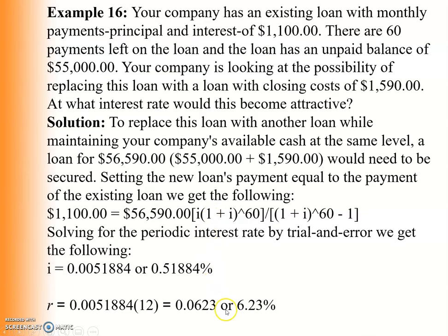This is the interest rate at which the new loan becomes attractive. It means that if the new loan is offered at 6.23% or less, it would be better to take the new loan.